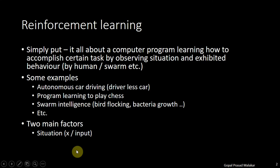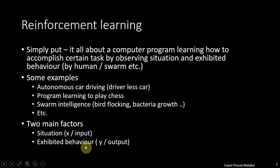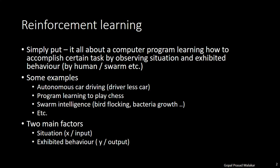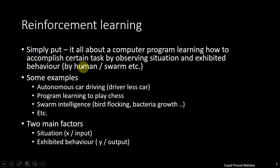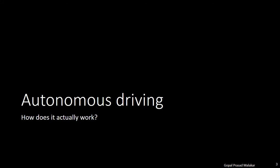The situation is like the input — traffic signal, road situation, angle of the road — and the exhibited behavior is the output, like the driver turning the steering wheel, applying a brake, or reducing the speed. Now let me explain how a computer program can learn to accomplish certain tasks by observing situations and exhibited behavior, using autonomous driving as the example.